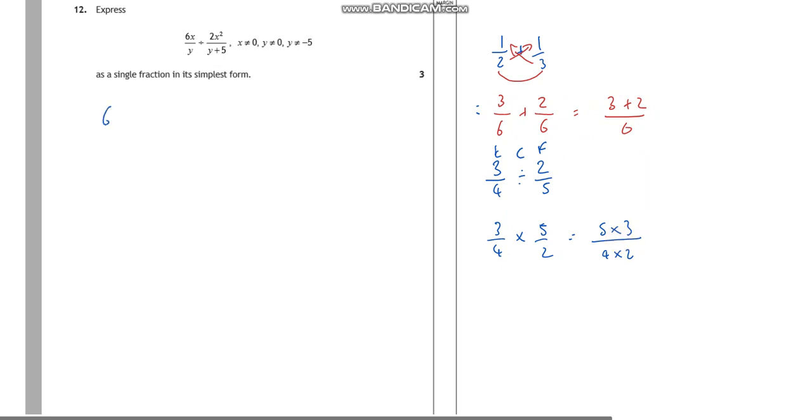So the first thing I'll do with this is I'm going to do keep, and then I'm going to do a flip, and I'm going to do a change. So that's your first step. If I then multiply that together, I've got 6xy plus 5 divided by 2x squared y. You then want to simplify as much as you can.